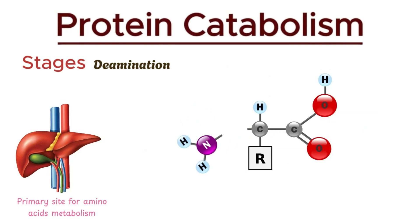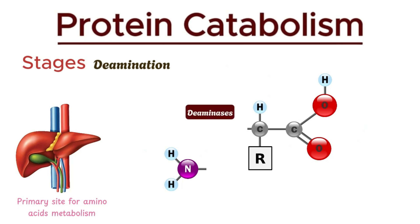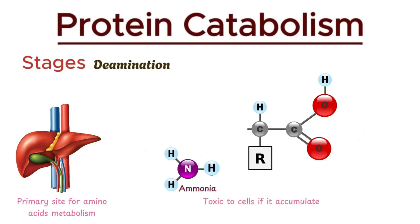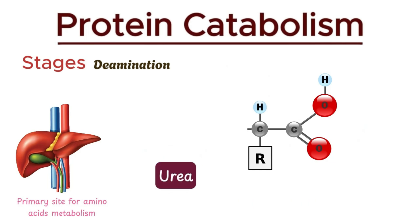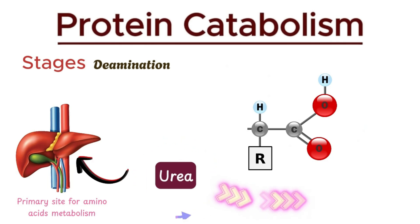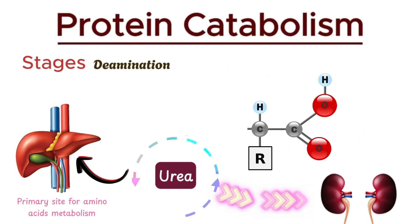During deamination, the amino group is removed from the amino acid. This reaction is typically catalyzed by enzymes called deaminases. The removed amino group is converted into ammonia. However, ammonia is toxic to cells if it accumulates, so the body quickly converts it into a less toxic compound, urea, through the urea cycle, also known as the ornithine cycle, in the liver.